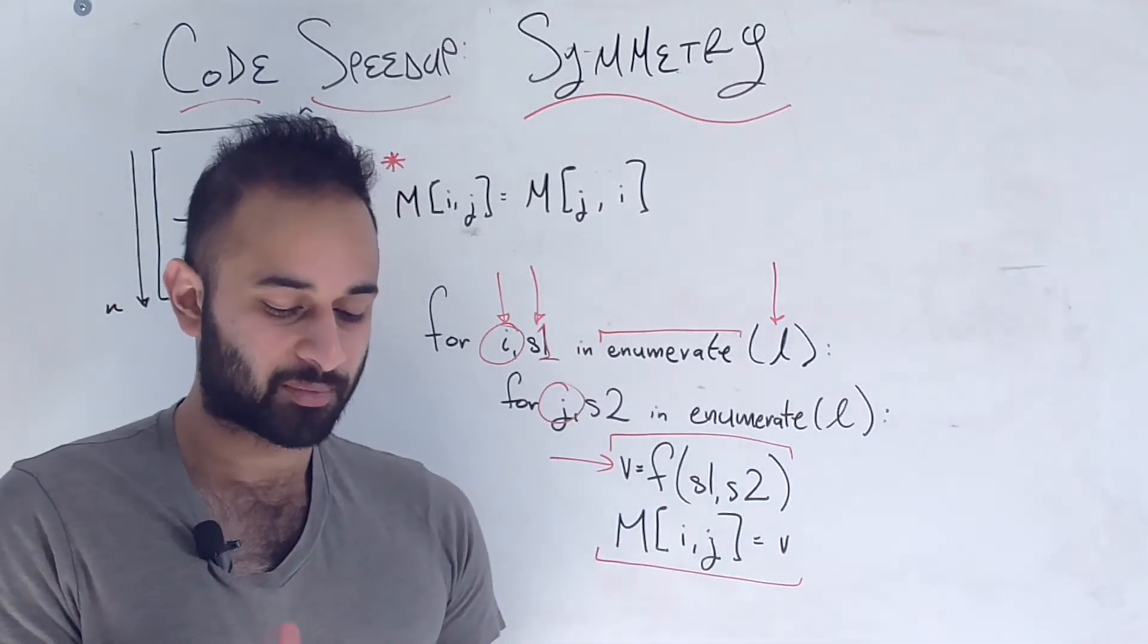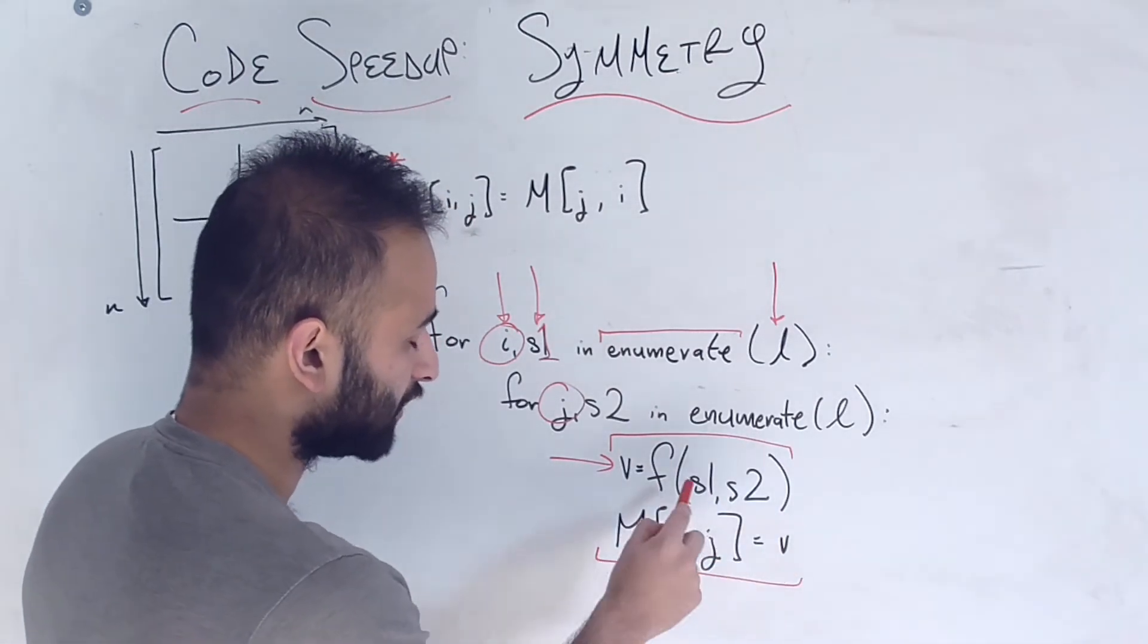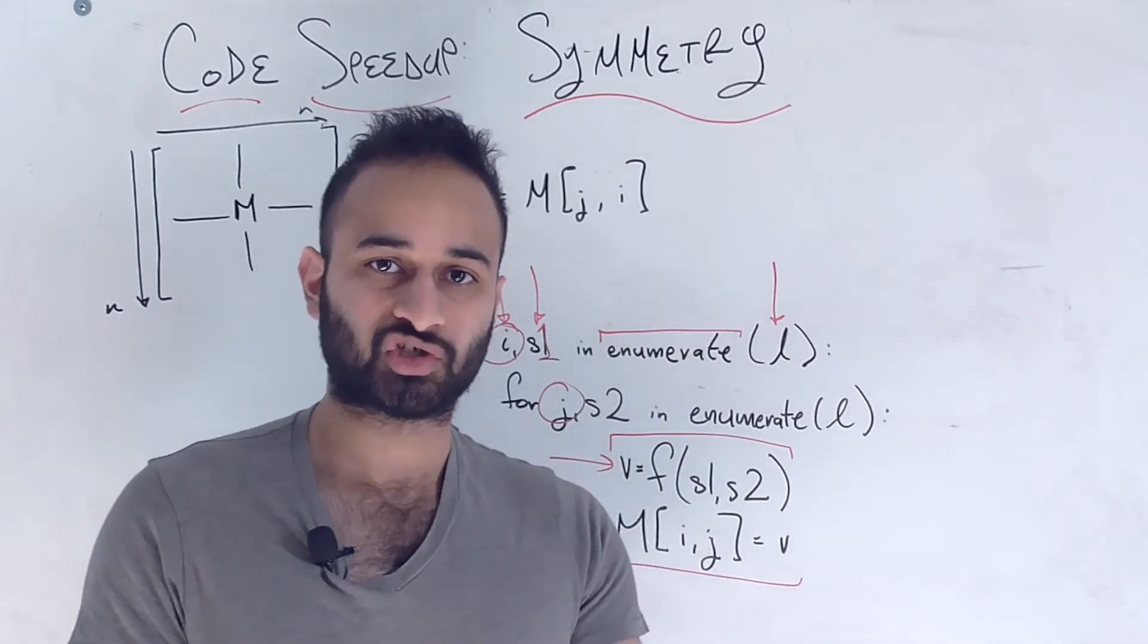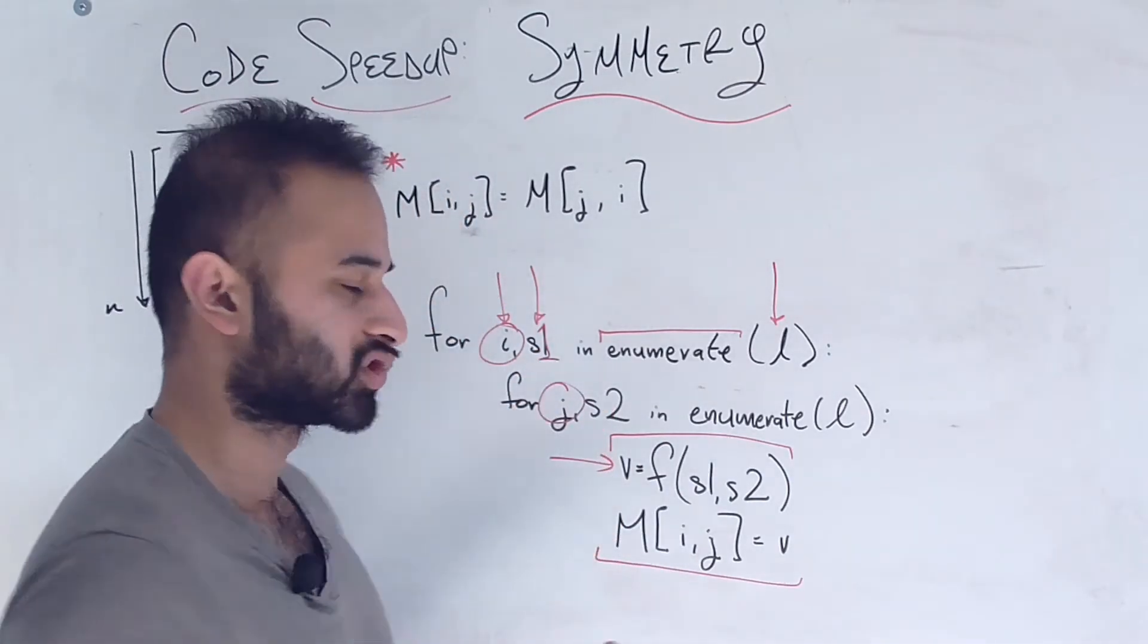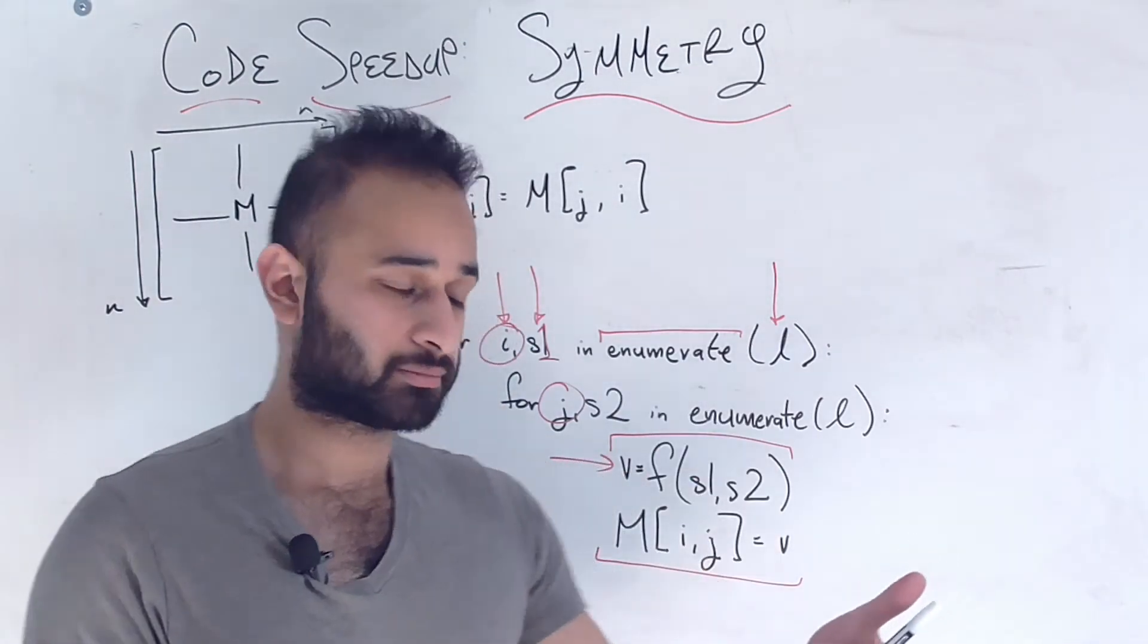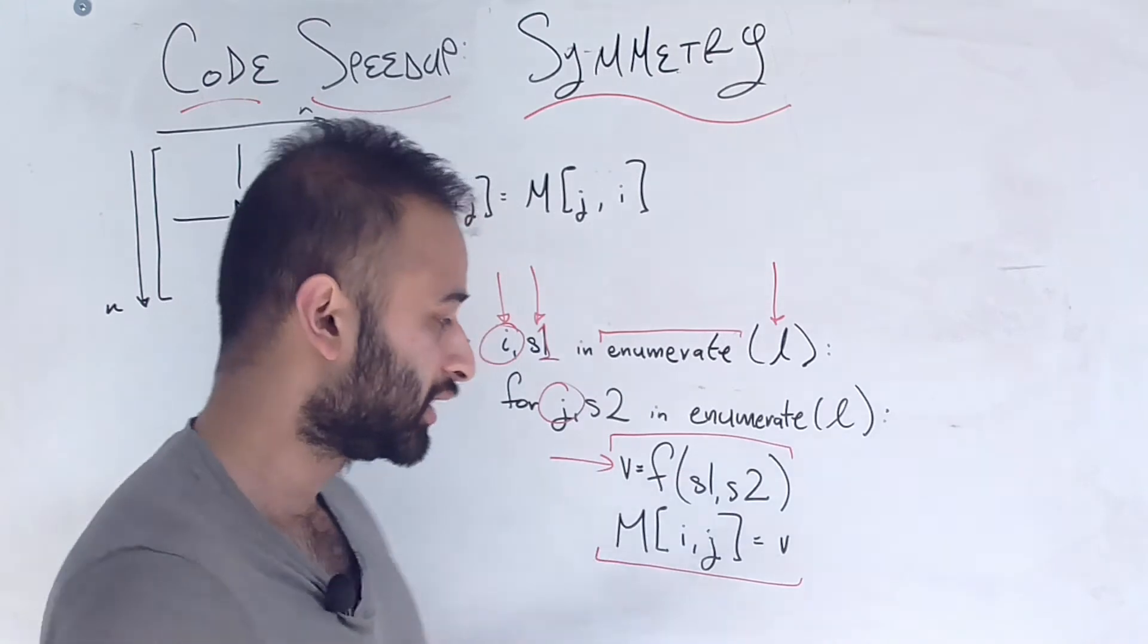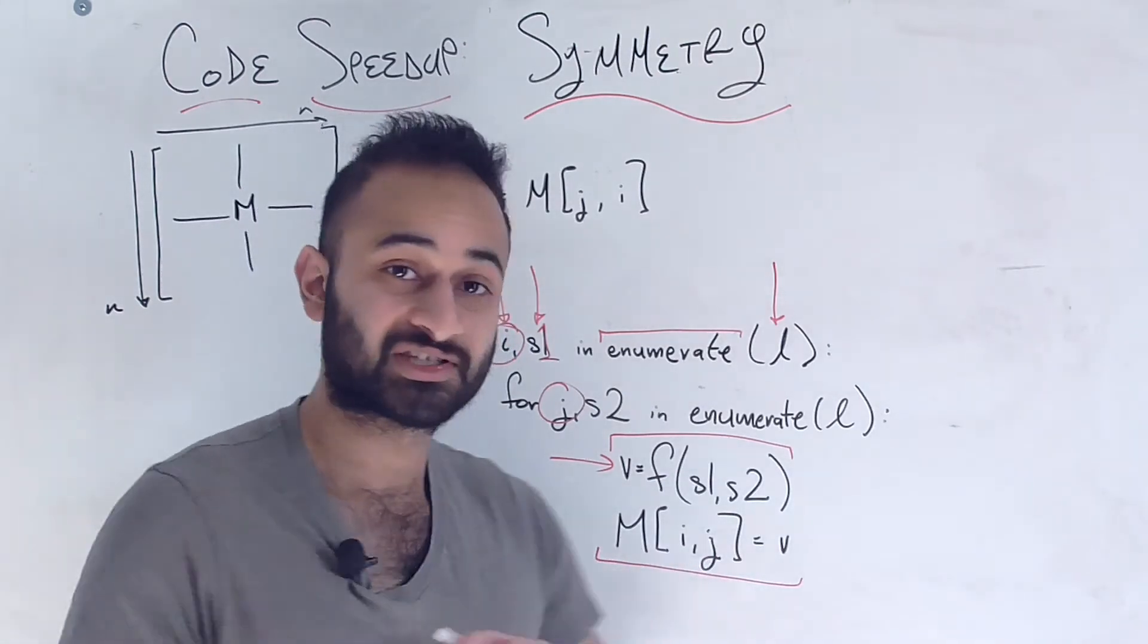But as we hinted at before we're doing a lot of extra work because this ij is going to get filled in and then we compute the similarity score for that student s1 and s2. But at some point during this double for loop we're going to get to the reverse situation where s1 becomes our s2 and s2 becomes our s1. So basically we're just looking at the students in the reverse order. So then we calculate the similarity score again which is going to give us the same answer so we just wasted time calculating it again. And we're going to fill in the j ith element of the matrix with the same similarity score.